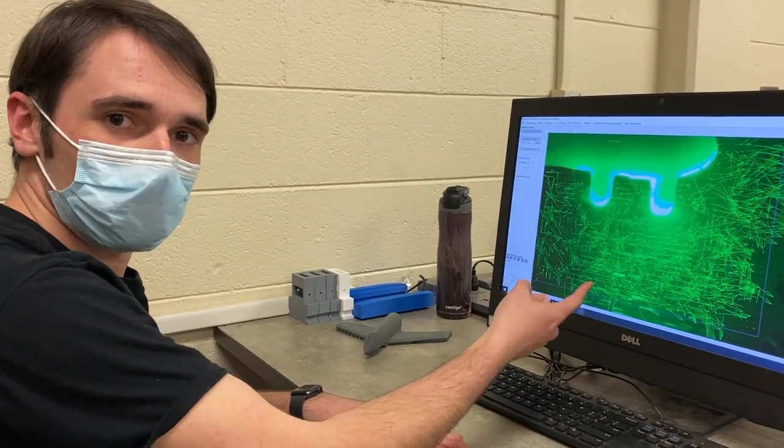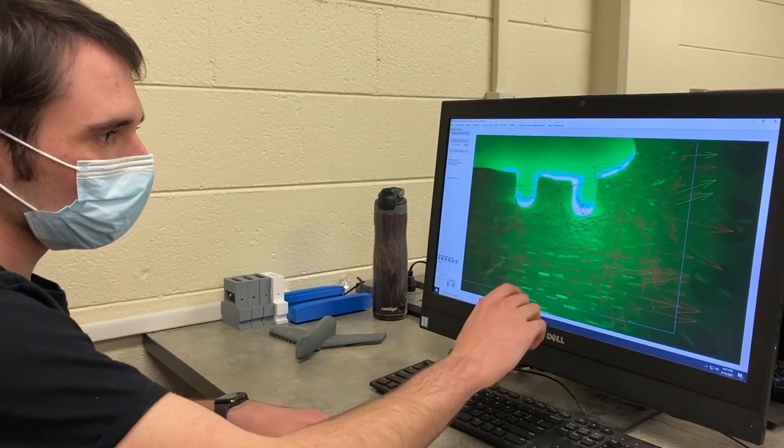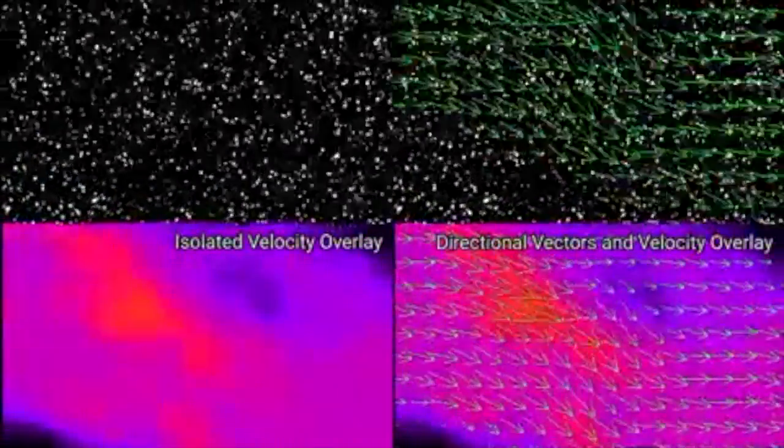PIV analysis most definitely provided us with qualitative results. Notice the turbulence and vortices about the forward and aft turrets in this video. But due to limitations with our camera, our team has run into a few problems with analyzing our captured video in PIVlab. Therefore, our quantitative results are still pending.